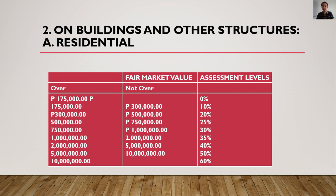For buildings and other structures under the residential classification: 175,000 pesos and below has an assessment level of 0%. From 175,000 pesos up to 300,000 pesos is 10%. Over 300,000 pesos and not over 500,000 pesos is 20%. Over 500,000 pesos and not over 750,000 pesos is 25%. As you can notice, the assessment level increases based on the fair market value. At the maximum of 10 million pesos, the assessment level is 60%.